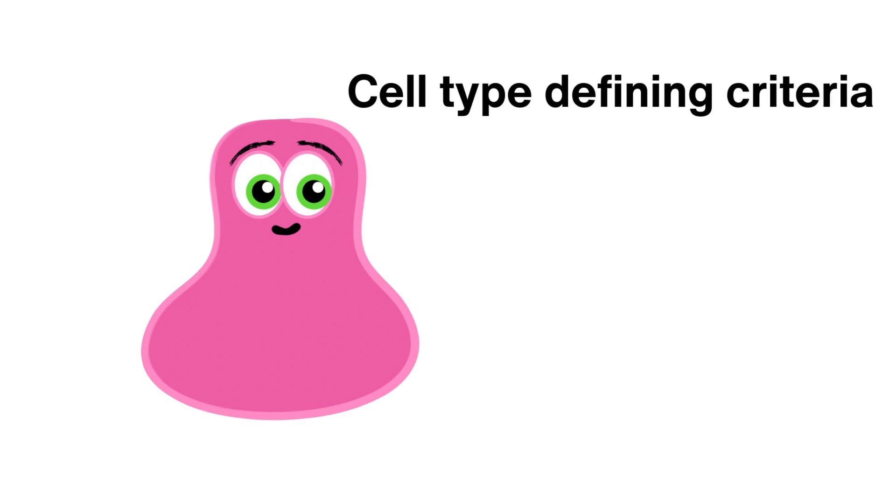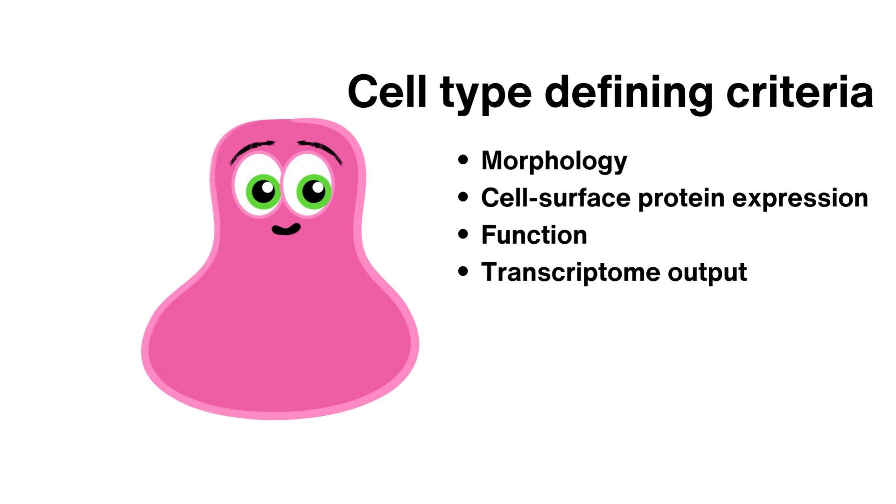Well a cell type is how we define cells. It can be determined by morphology or how the cell is shaped, by cell surface protein expression which is important for cellular communication, by cellular function meaning a cell's job, by the transcriptome which includes all the genetic outputs of a cell, and by epigenome confirmation, the total set of epigenetic marks in cellular DNA.